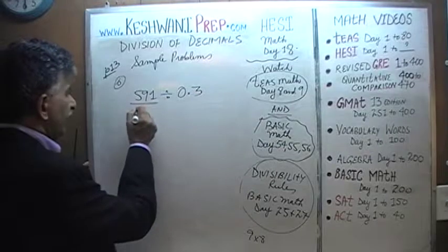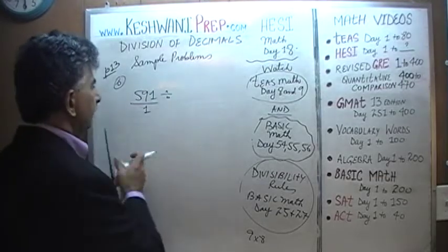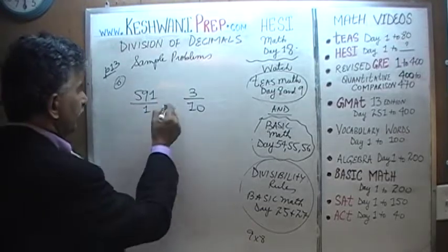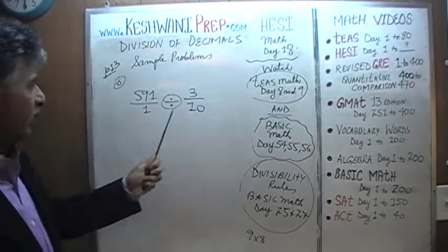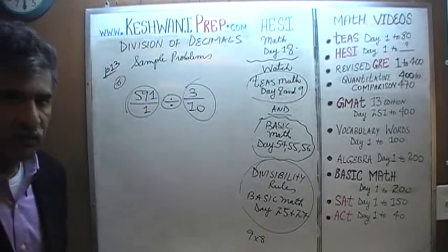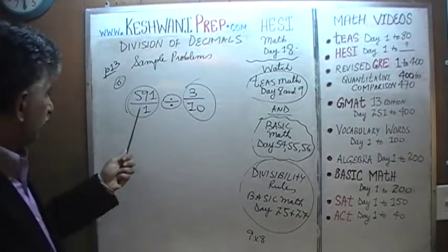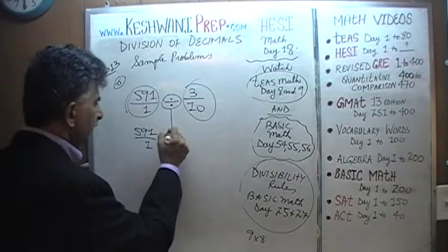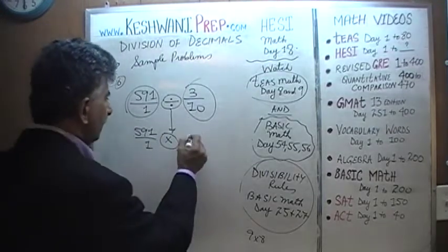591 is simply 591 over one. And 0.3 can be written as three over ten. We know that when we have to divide one fraction by another fraction, we can convert that division problem into a simple multiplication problem by taking the reciprocal of the second fraction. So 591 over one, times — the division becomes multiplication — and three over ten becomes ten over three.